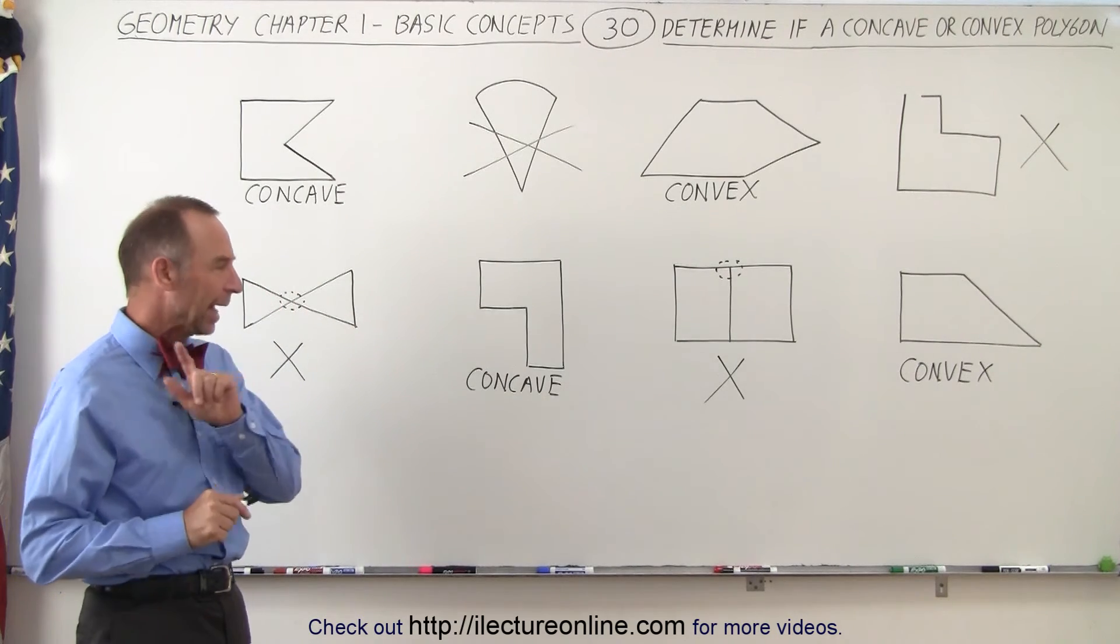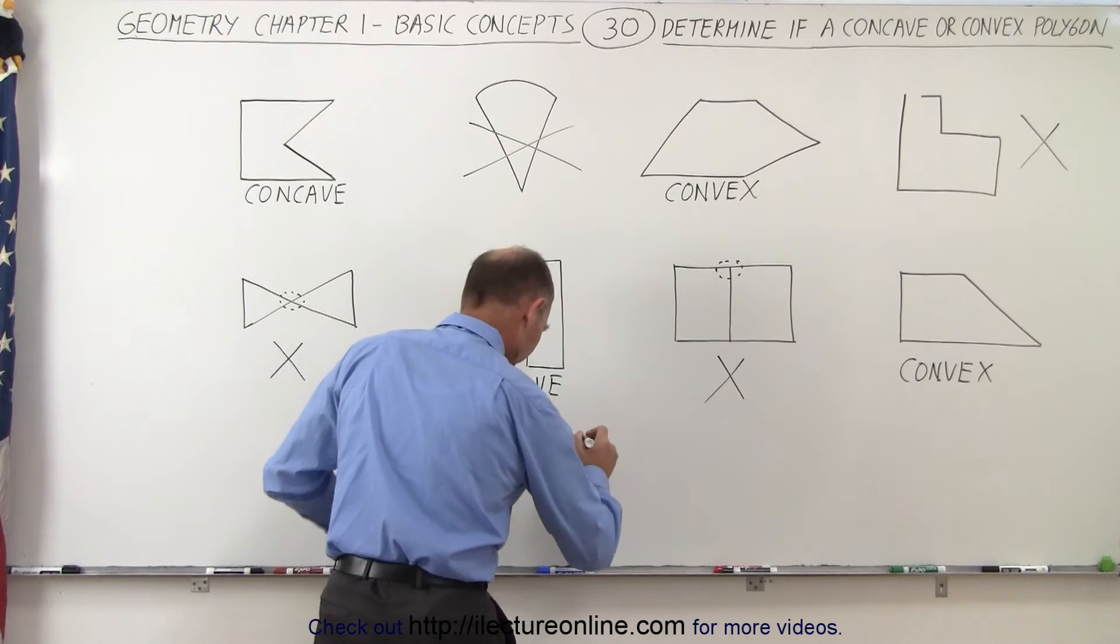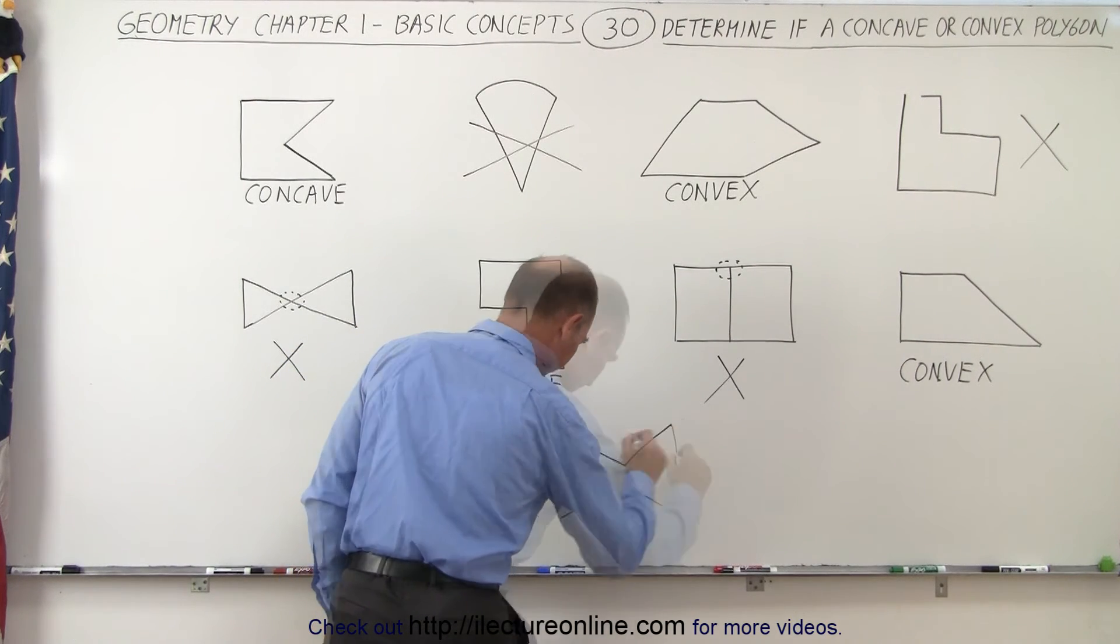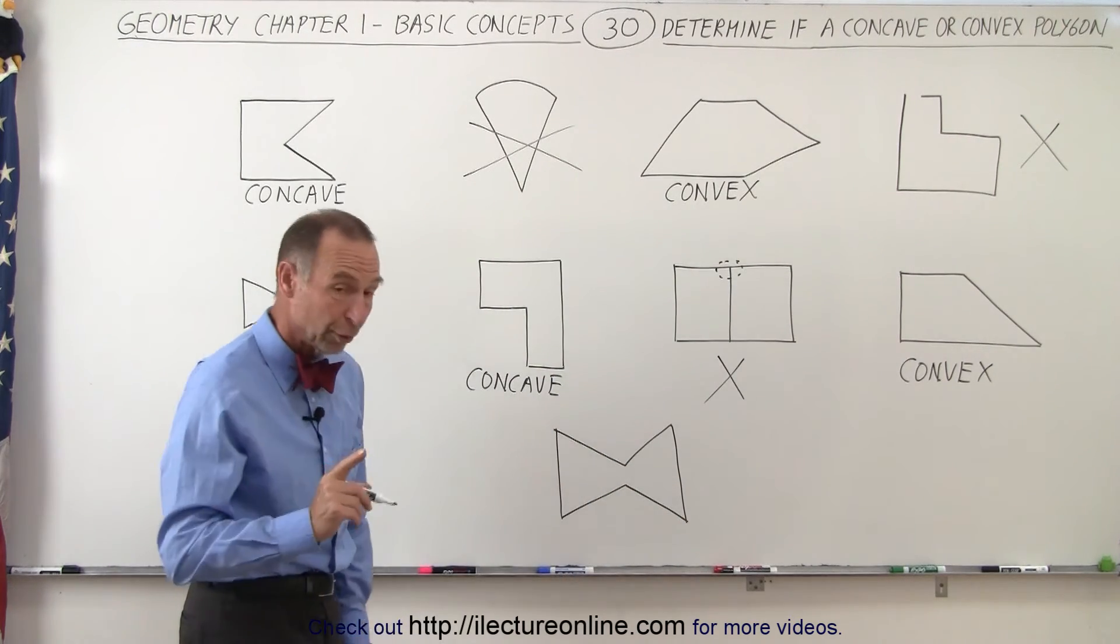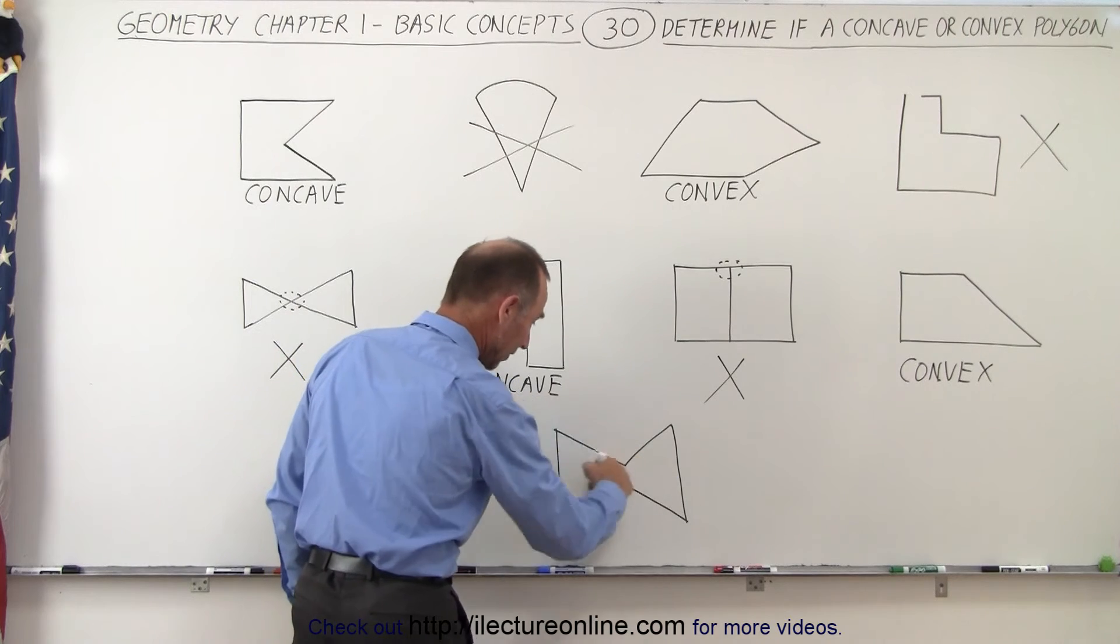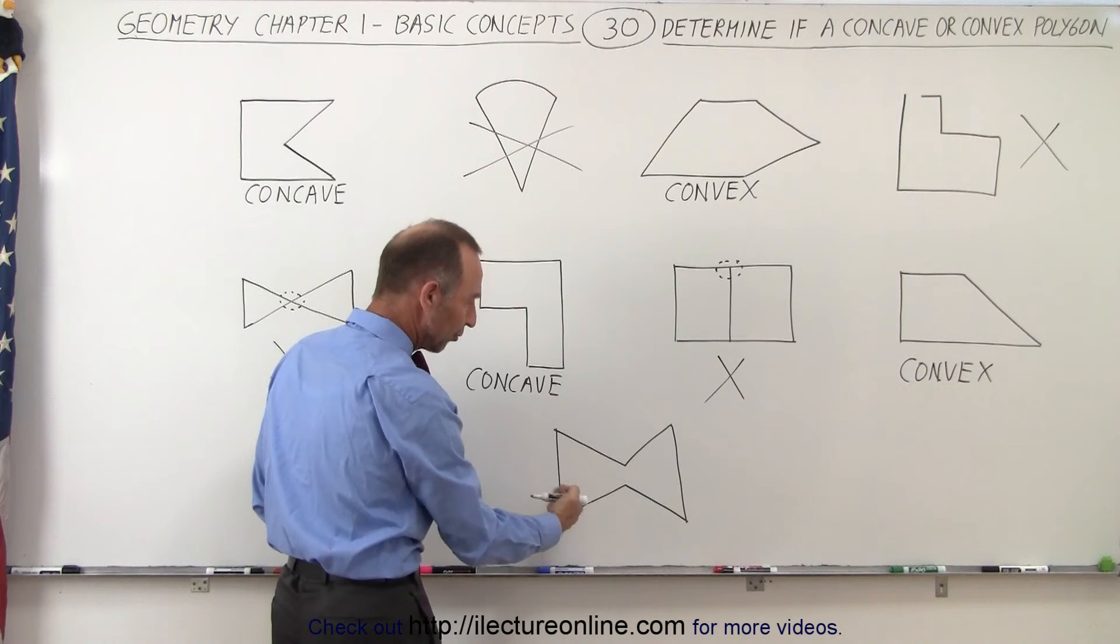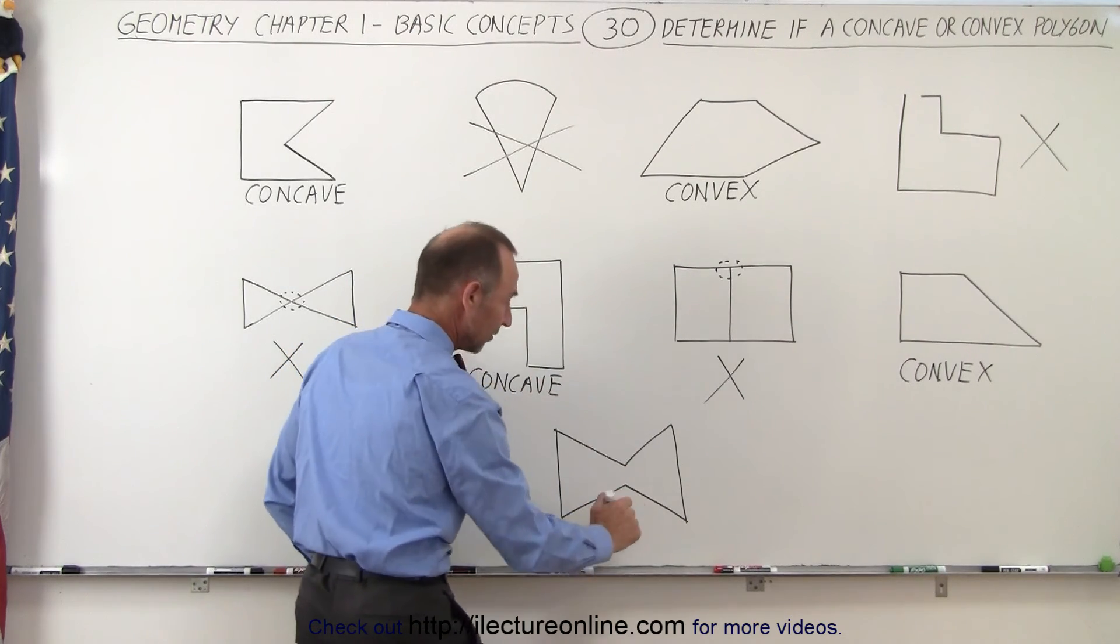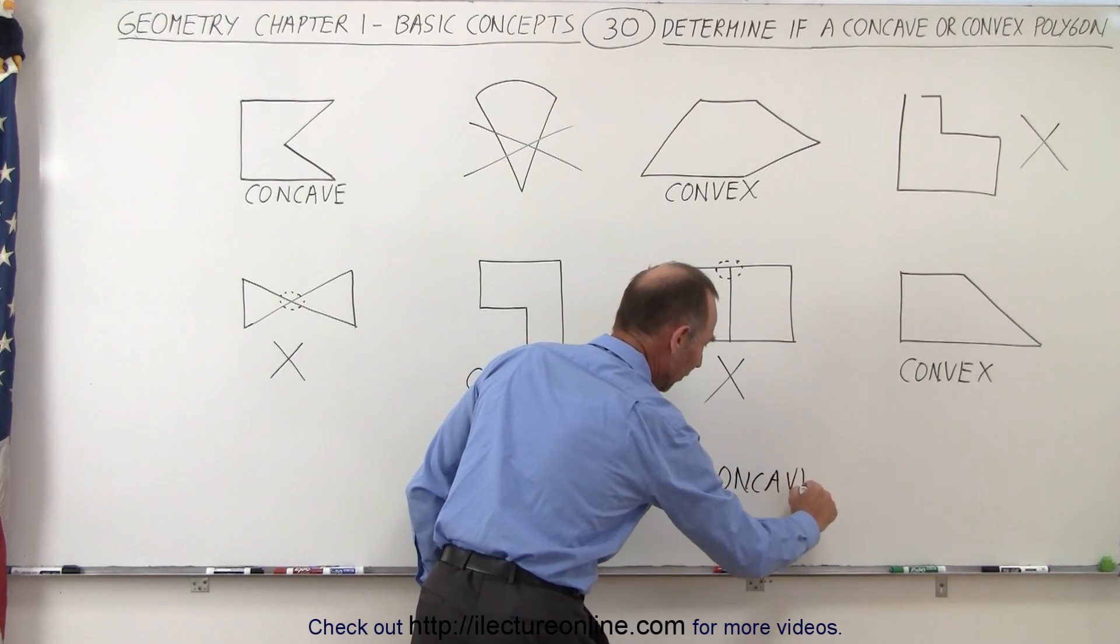And maybe we should add one more, something that might otherwise confuse people. What if we have something that looks like this, kind of a bit of an hourglass? Notice that we have a cave-in on one side and a cave-in on the other side. So definitely it is a polygon that has all straight line segments, but it has a cave-in on this side and a cave-in on that side, so definitely this would be a concave polygon.